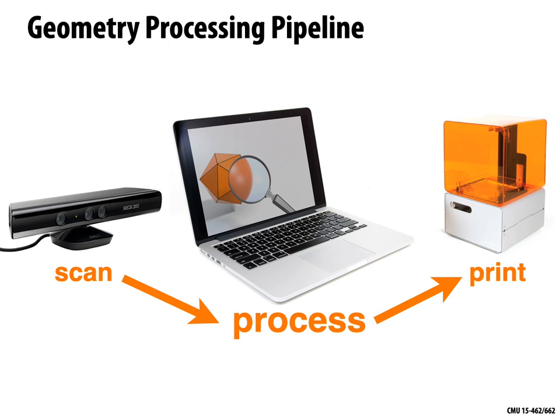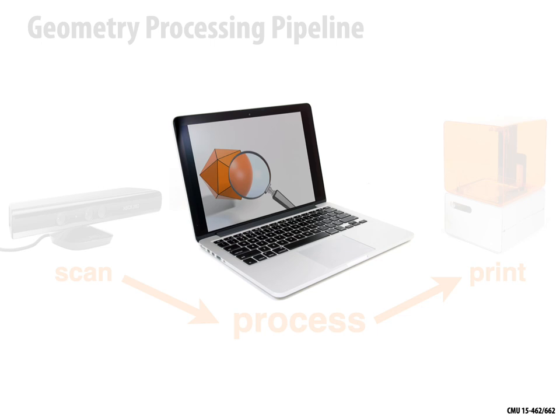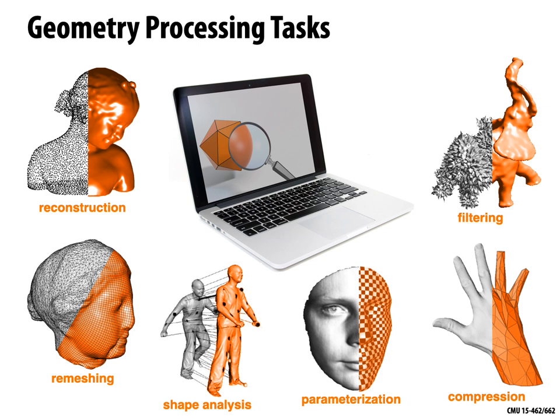Then we process it algorithmically: edit it, transform it, analyze it. When we're happy with the changes, we print it back out to give it some new function. Processing tasks in the middle include reconstructing a surface from samples, filtering the signal — removing noise or emphasizing certain frequencies — and tasks quite different from traditional signals, like taking a curved surface and flattening it out over a plane, which we already needed for texture mapping.